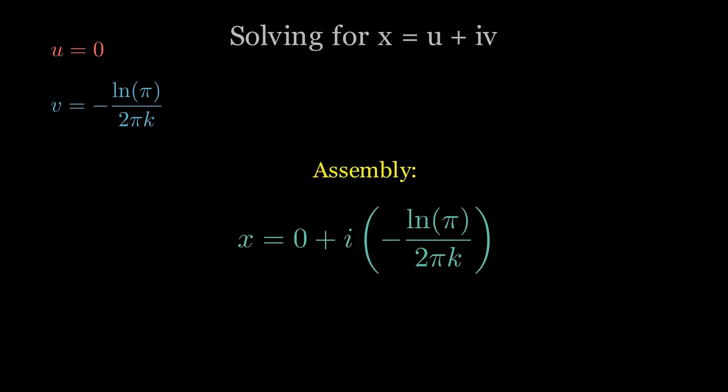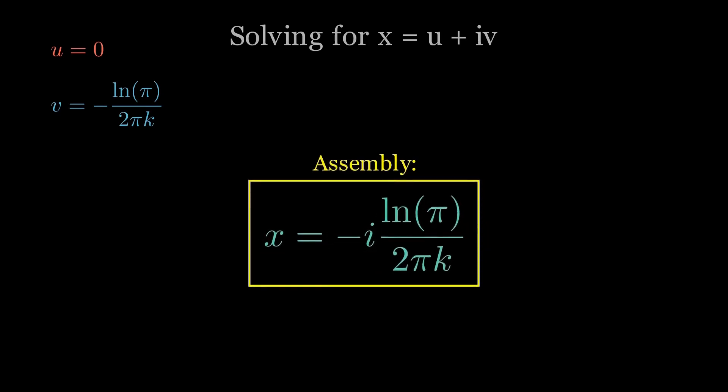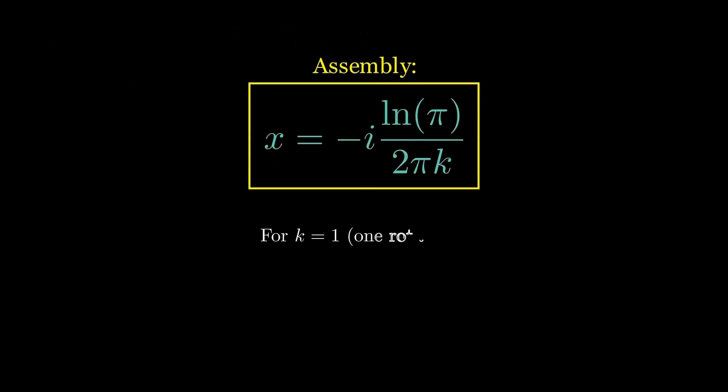Now assemble x equals u plus iv. That becomes x equals negative i times ln of π over 2πk, and for one rotation, k equals 1. x is approximately negative 0.183i, purely imaginary.